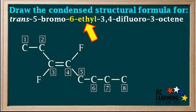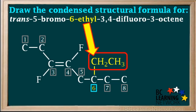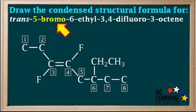The '6-ethyl' means we have to add an ethyl group to carbon number six. We could add it above or below the chain; here we'll add it above. Remember, an ethyl group is CH2CH3. '5-bromo' in the name means we have to add a bromo group to carbon number five. We add it to carbon number five — adding it below the chain makes the structure less crowded.